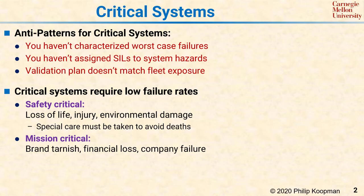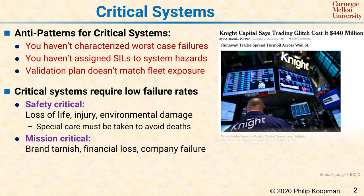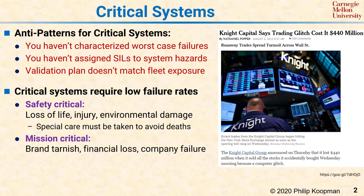Some systems are mission critical even though they don't involve direct harm to people. A mission critical system failure can result in brand tarnish, significant financial loss, or even company failure. Take, for example, Knight Capital. In 2012, this Wall Street company basically went under when a computer software configuration error led to the loss of $440 million in just a few minutes. For practical purposes, that software error killed the company.